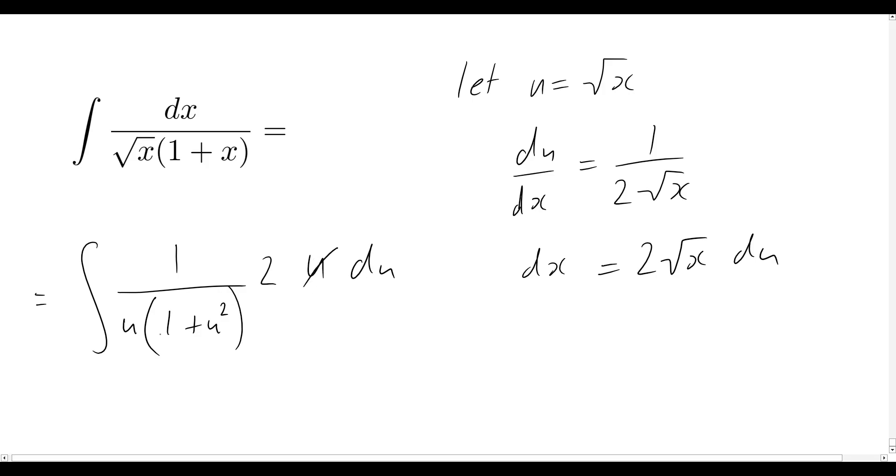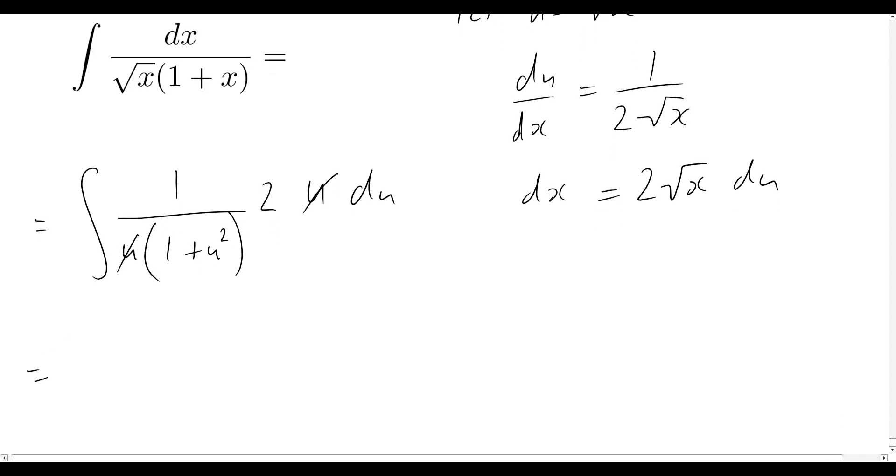So now we see that the u's will cancel out over here. And all we're left with is, well, we'll take that 2 out the front, the integral of 1 over 1 plus u squared du.